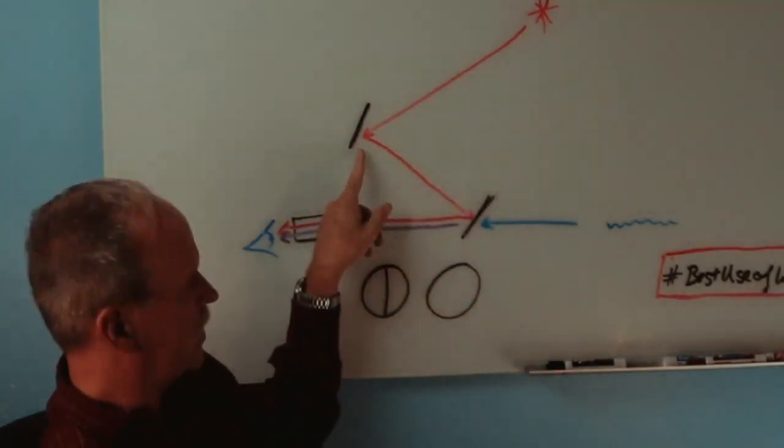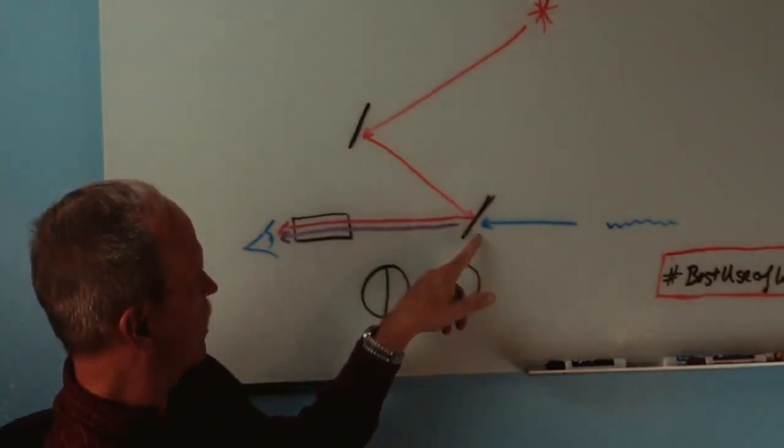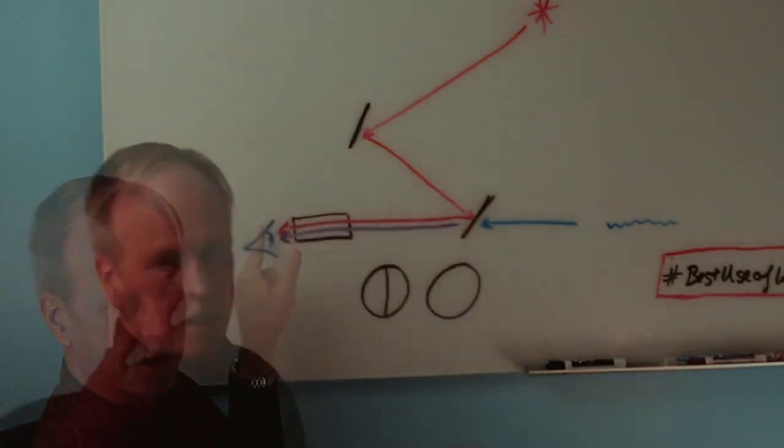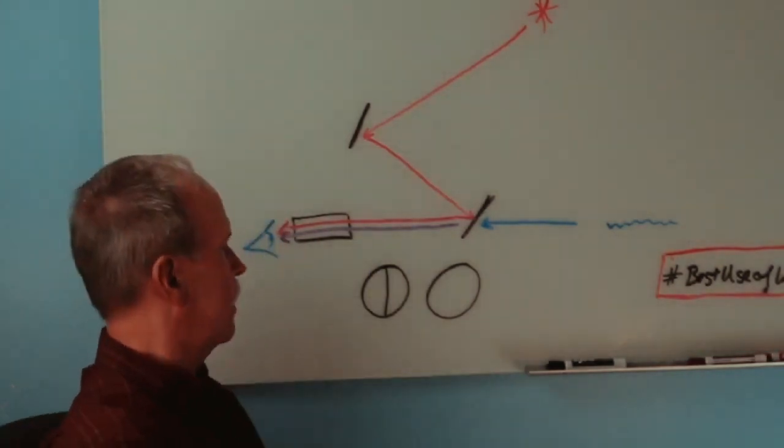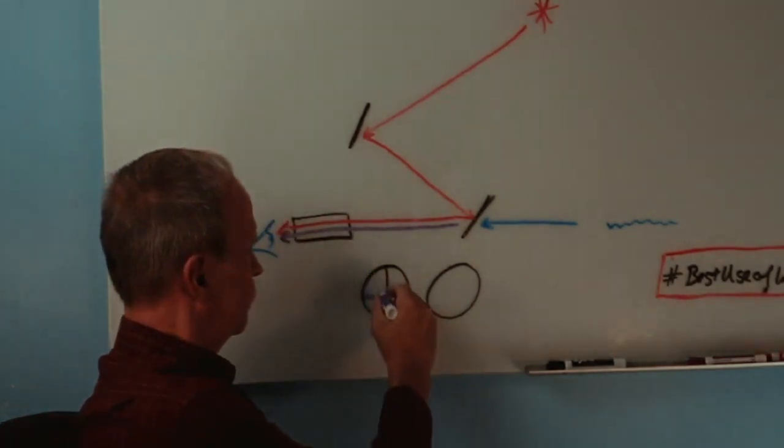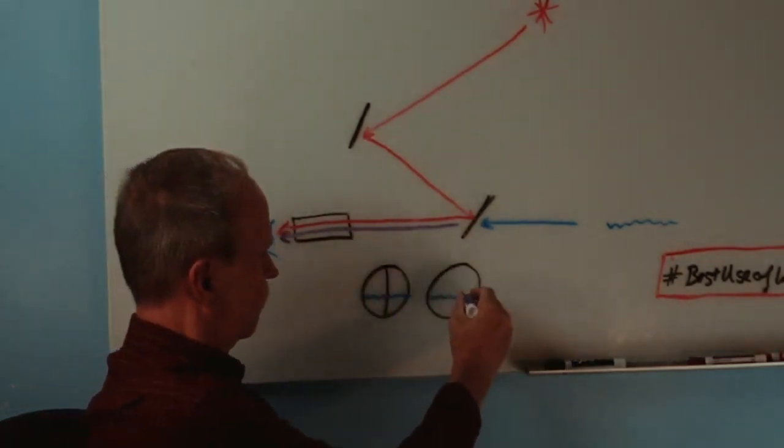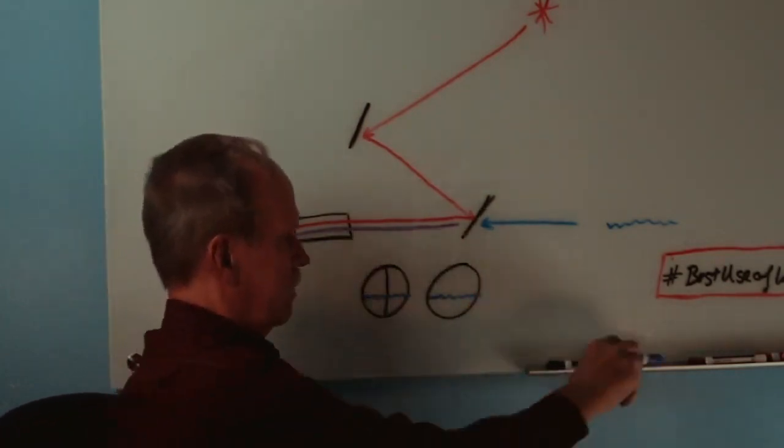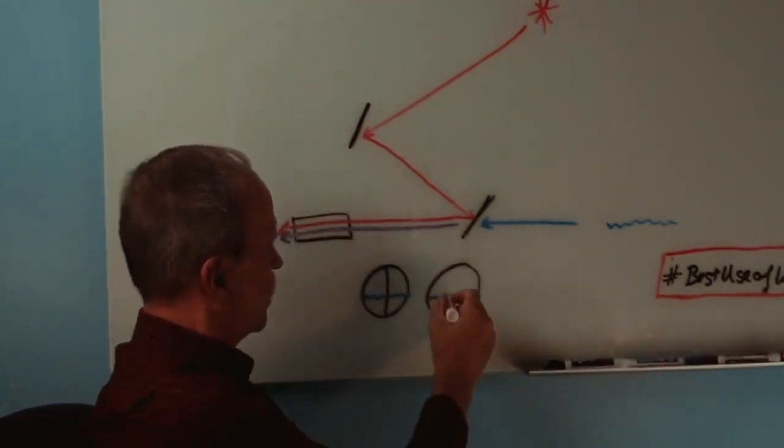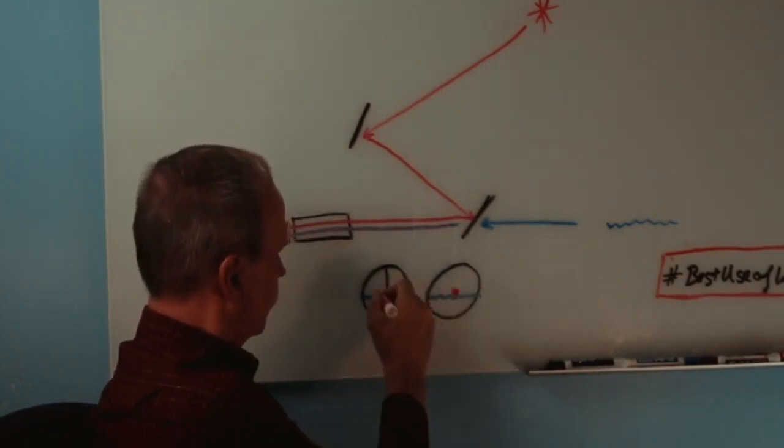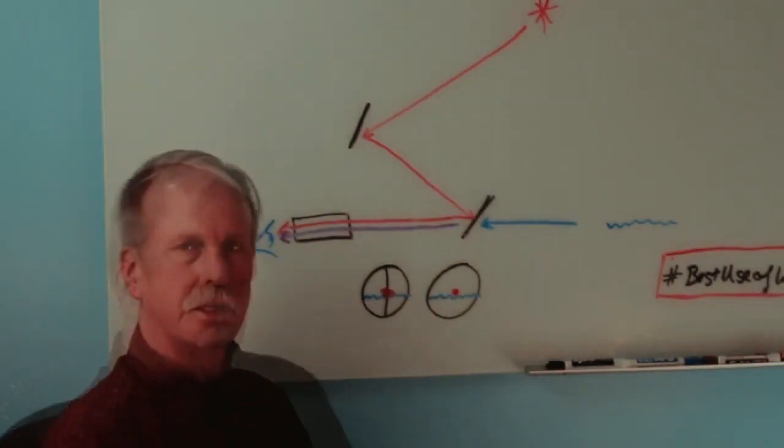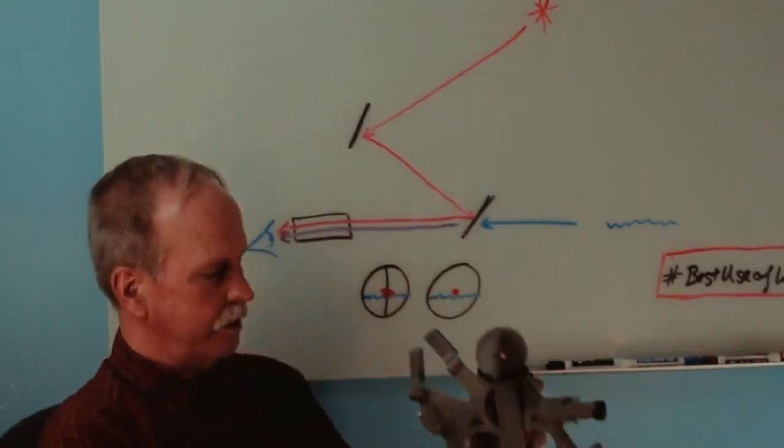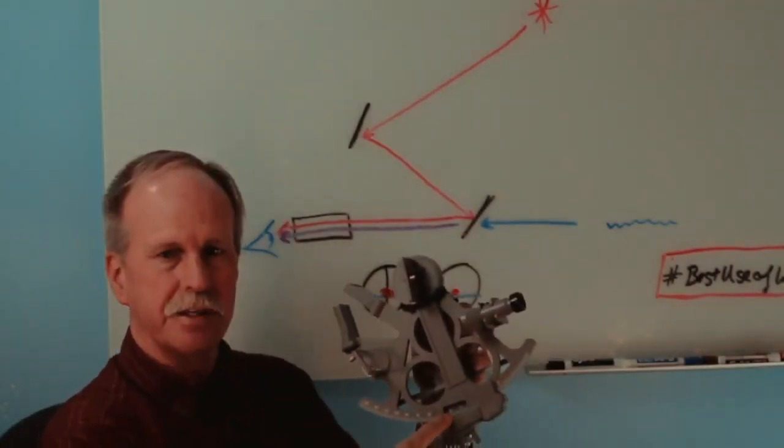Now when this is set up correctly, what we will do is we will see the ocean, and then we will see the star right on the horizon. That means we have this angle correct. So then to get our reading, what we do is we simply read off the angle on the sextant.